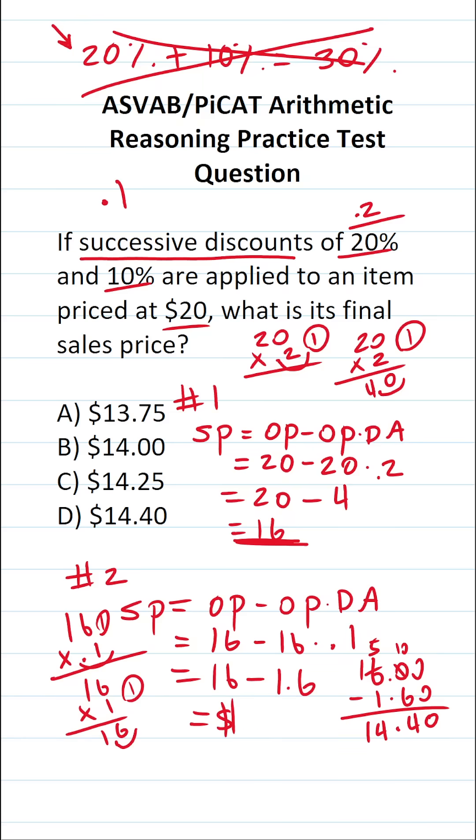So we can see that after successive discounts of 20% and 10% respectively, our final sales price is going to be $14.40.